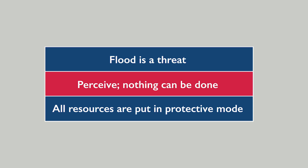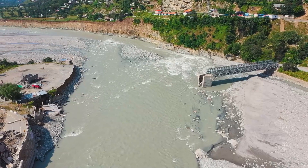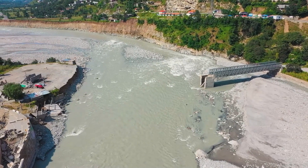Coming back to the observations the design team found during the site visit, there were two deep-rooted mental models. The first mental model is that flood is a threat, flood is a risk, and when it is considered as a risk, it is perceived that nothing can be done to prevent it and all resources are put in protective mode. So infrastructure is built downstream, which is then washed away again.